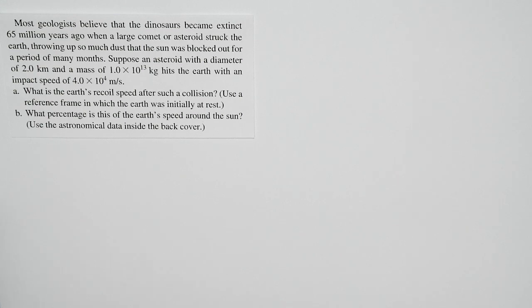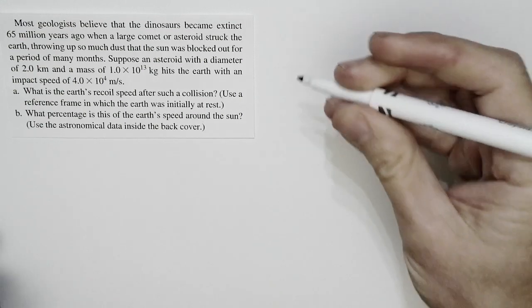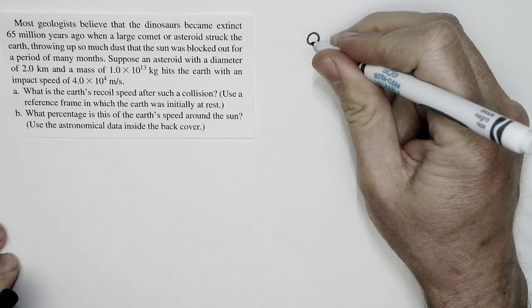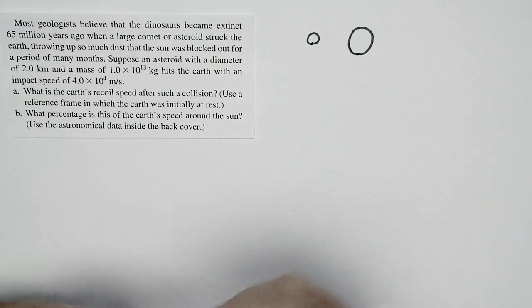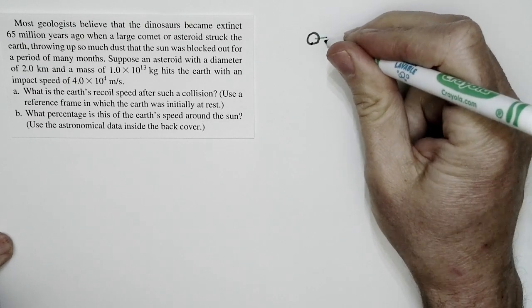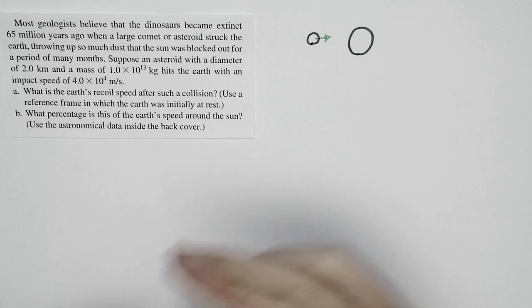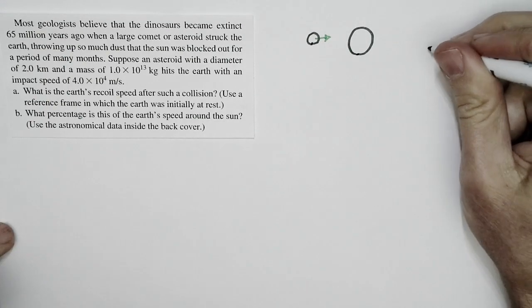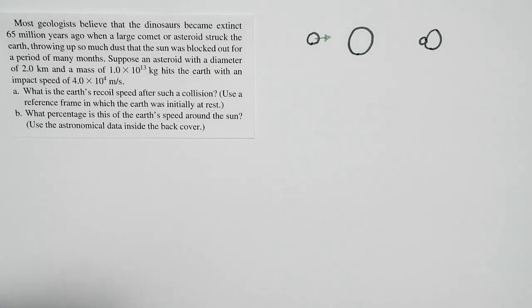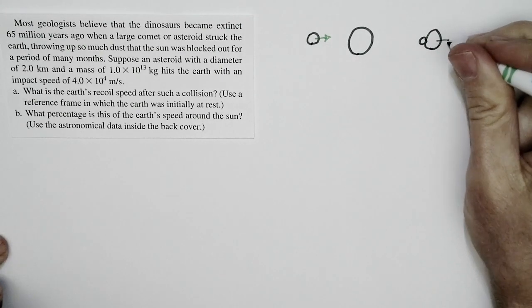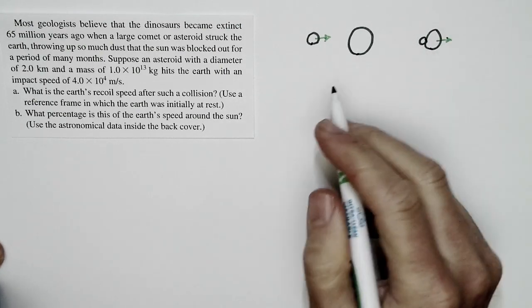I've heard some folks say that the issue was this: the asteroid comes in, it's moving really fast, hits the Earth, slams into it, and the Earth recoils. So here's our situation: an asteroid comes in, hits the Earth, and subsequently the Earth plus the asteroid are moving together at a speed that's enough that it knocks the Earth out of its orbit or something like that.